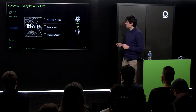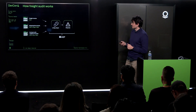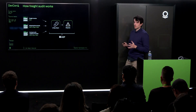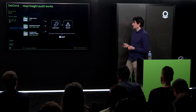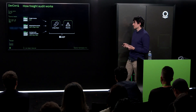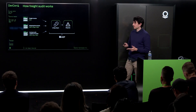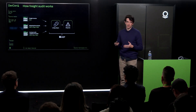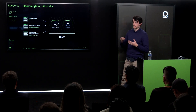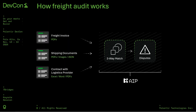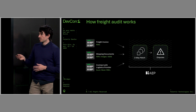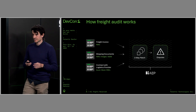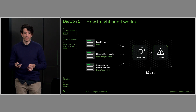First, I want to take you through how freight audit works. There are three core inputs: the invoices themselves, the shipping documents, and the contracts with the provider. You effectively match these three, find any discrepancies, and dispute them — sending a message, an email, or by API to the carrier to flag the problem. These three data sets all come from very different systems and very different technologies.